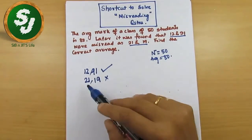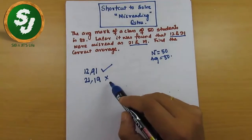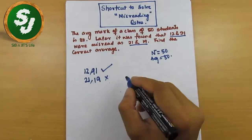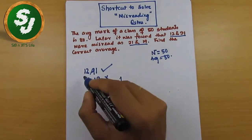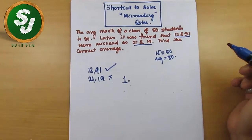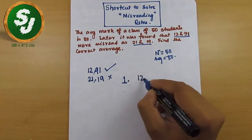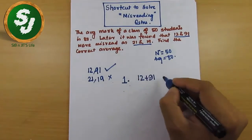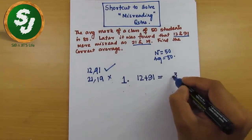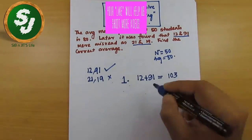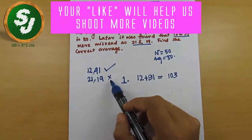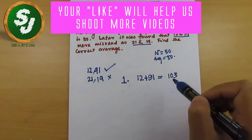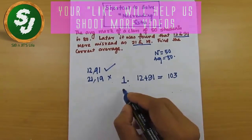So what you will do: in step one, add the correct marks. This is adding up the correct marks, which means 103. I added 12 and 91. So identify the correct marks, identify the wrong marks, and in step one you add up the correct marks.